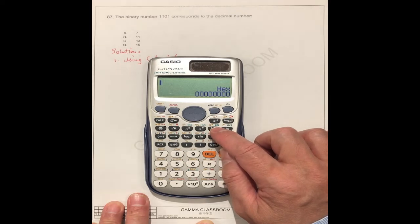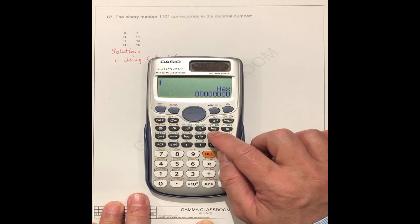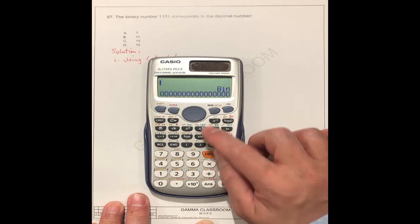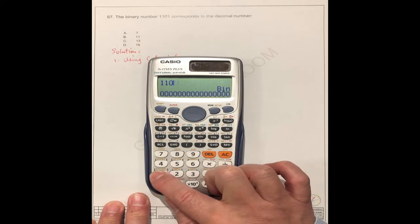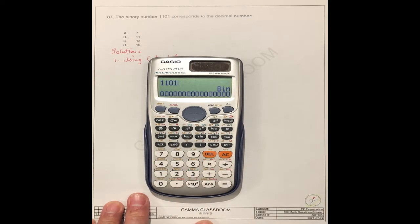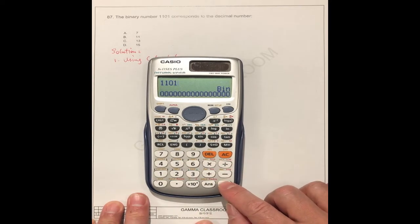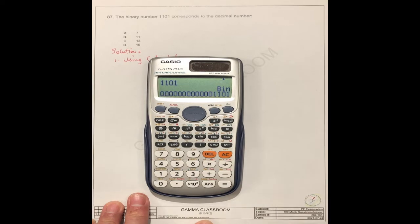You see the green color under the log here, bin. So, we just input 1, 1, 0, 1.